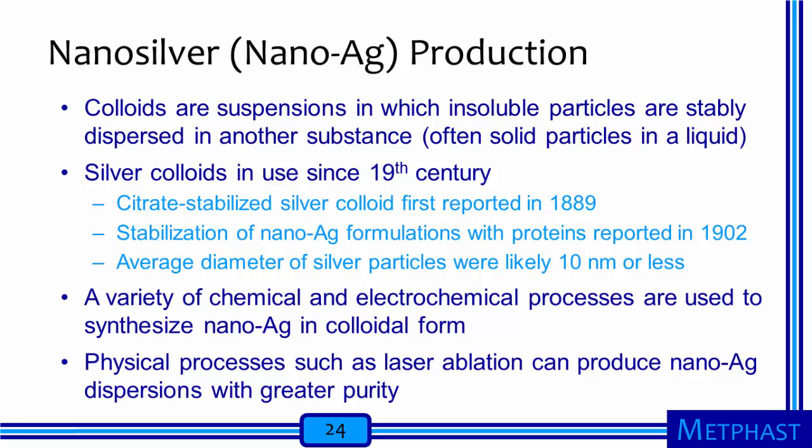Let's get started with nanosilver and how it is produced. Colloids are suspensions in which insoluble particles, like silver, are stably dispersed in another substance — usually solid particles dispersed in a liquid. Silver colloids have been produced industrially since the 1800s. Citrate-stabilized silver colloids were first reported in 1889, and stabilization of nanosilver formulations with proteins was reported as early as 1902. Modern production using these same techniques suggests that the average diameters of the silver particles were likely 10 nanometers or smaller — so these nanomaterials were in use a long time ago, even if producers didn't know they were using nanomaterials.